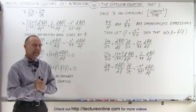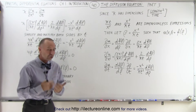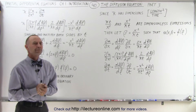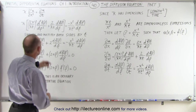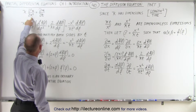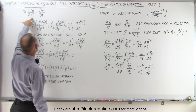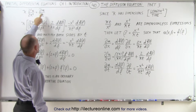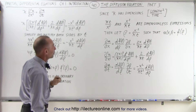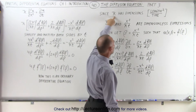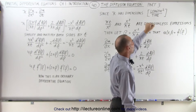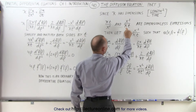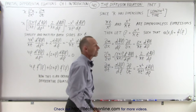Welcome to our lecture online. We're going to take a look at the diffusion equation and try to solve it in a slightly different way. In the previous video, we started with the diffusion equation: some constant times the partial second derivative of u with respect to x equals the partial first derivative of u with respect to t. We discovered that k must have dimensions of length squared over time, such that kt over x² and x² over kt are both dimensionless expressions.